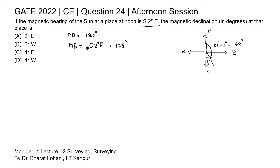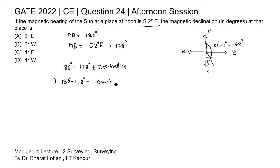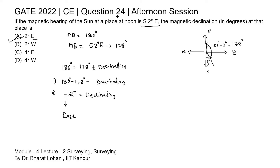Using these two values in the equation: True Bearing (180°) = Magnetic Bearing (178°) ± Declination. Solving: 180 minus 178 = 2 degrees, which is positive. The positive sign indicates that the declination is in the east direction. So the magnetic declination is 2 degrees East. This corresponds to option A, which is the correct answer.